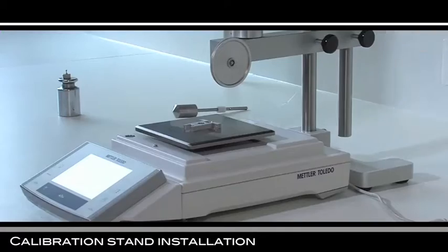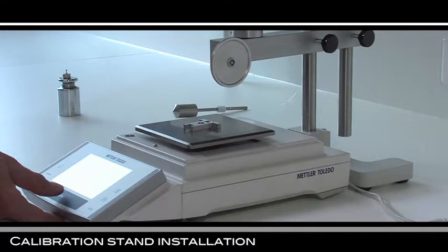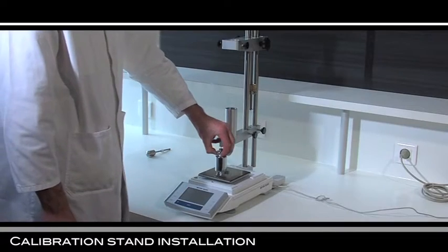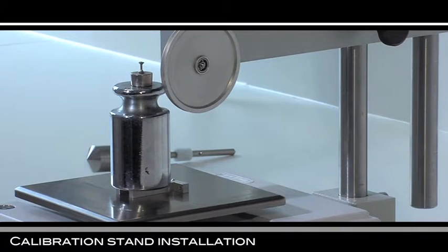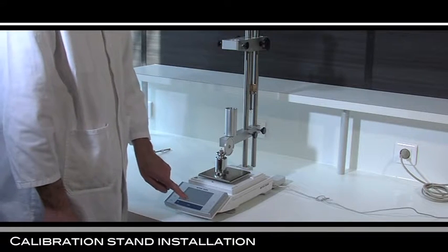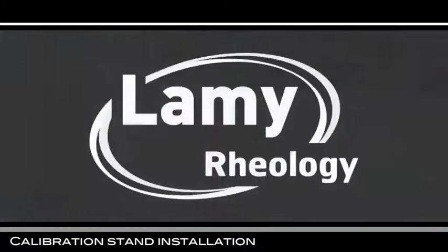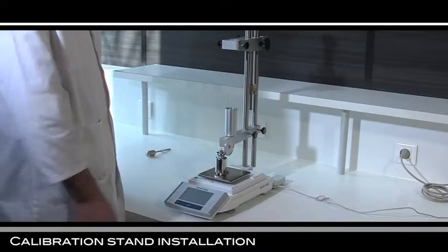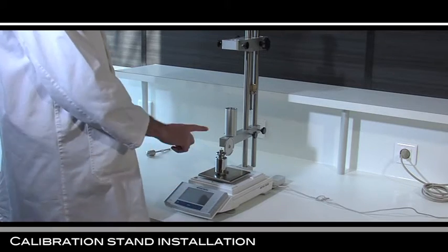Place the tare at the middle of the balance and make the zero again. Place the weights of 510 grams on the tare and set the balance in percentage. Make the 100% on the 510 grams. Make the zero in percentage.